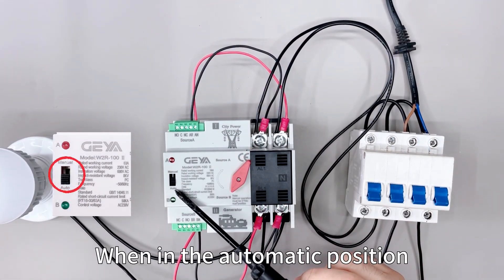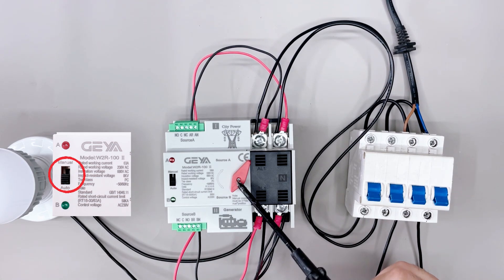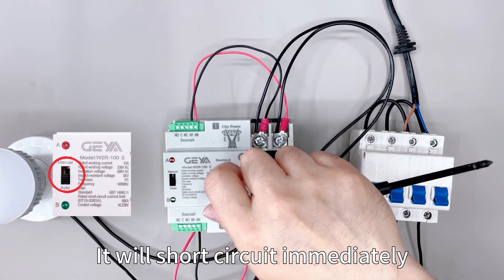This push rod button - when in the automatic position, you cannot push the putter. It will short circuit immediately.